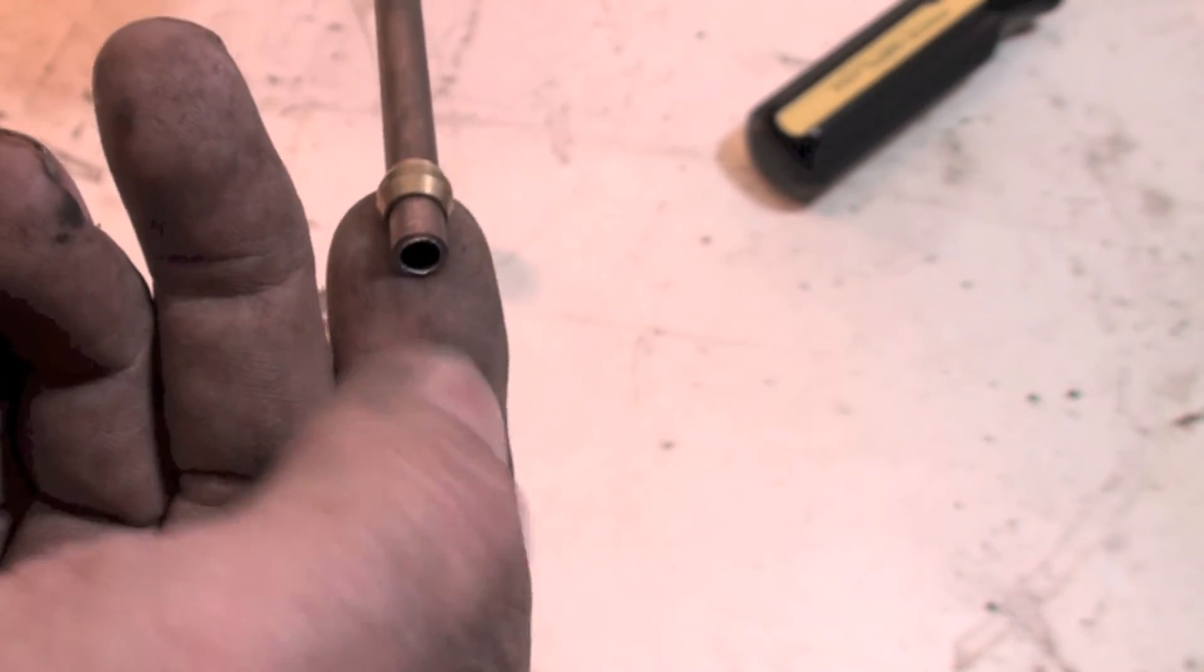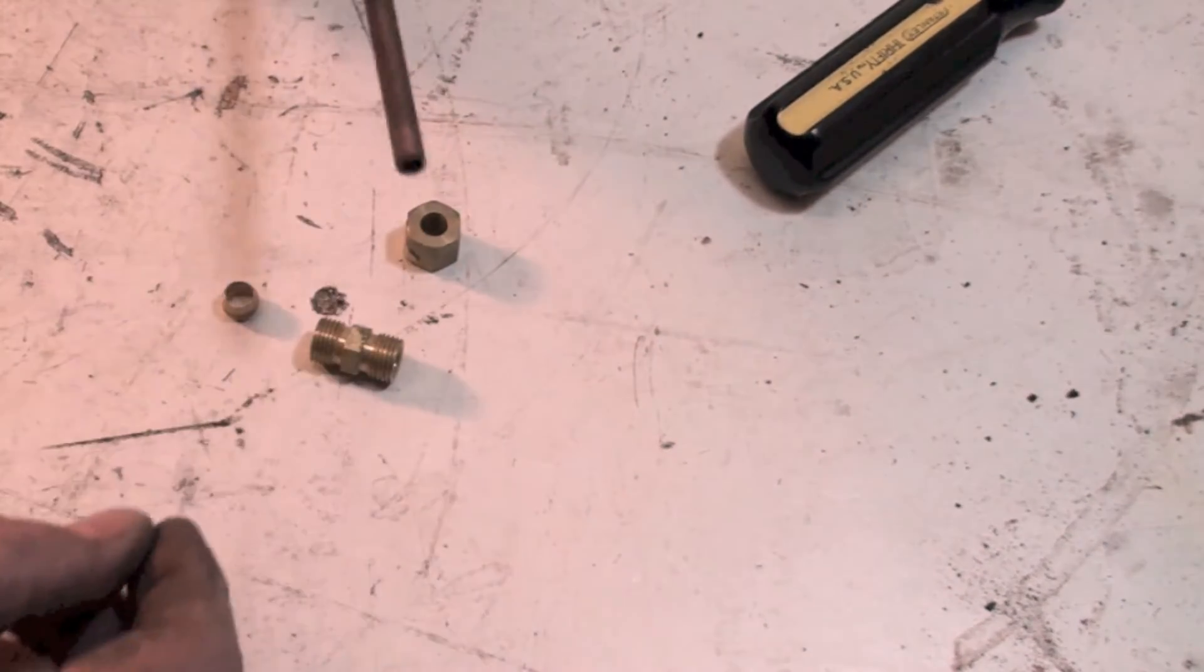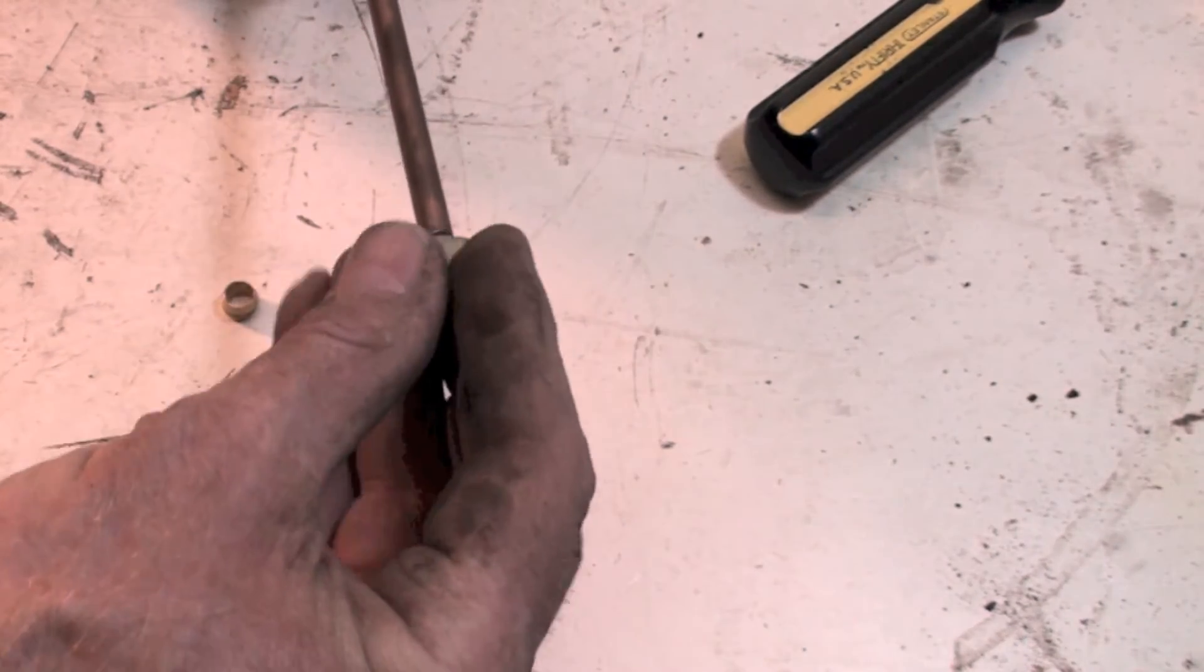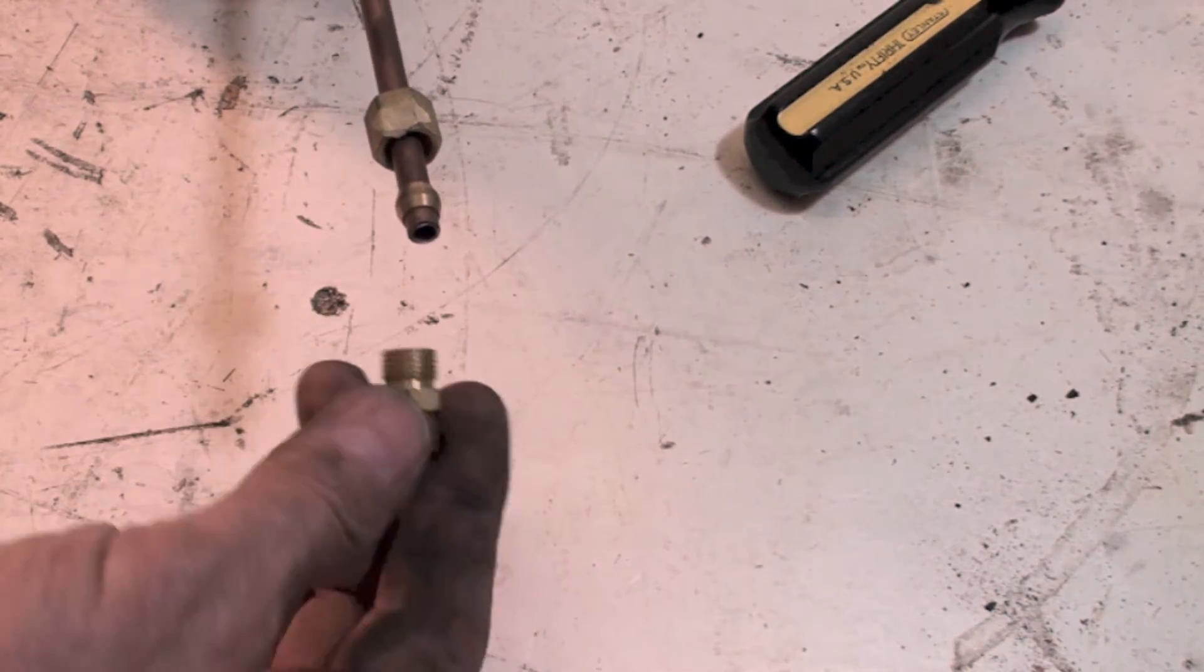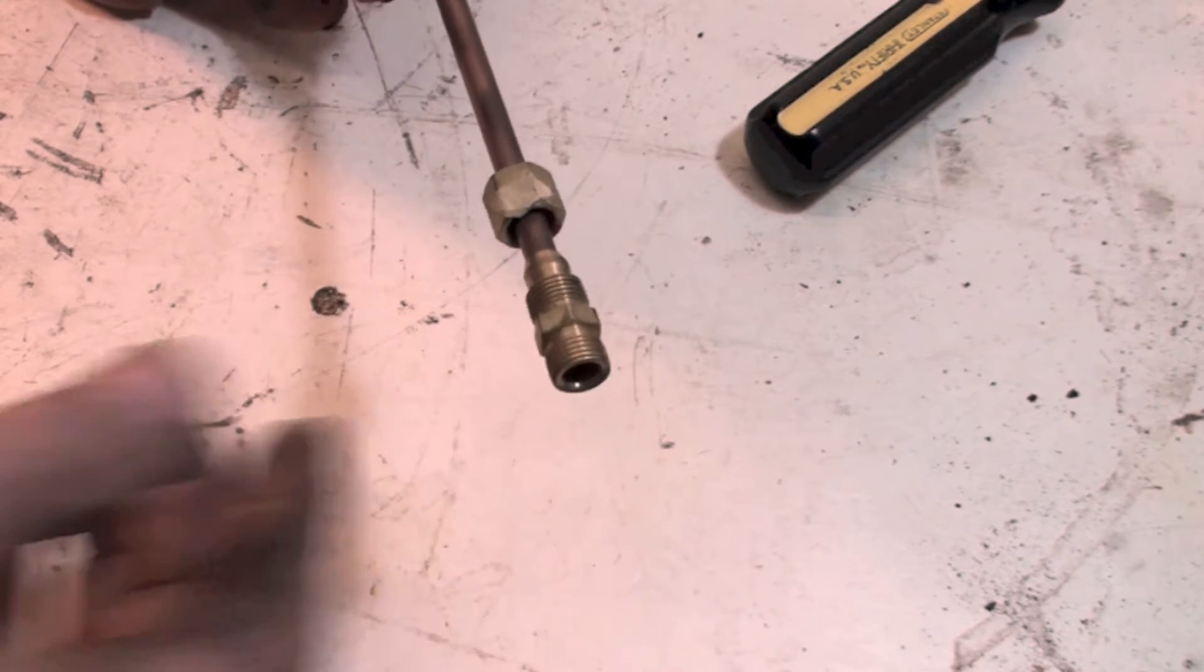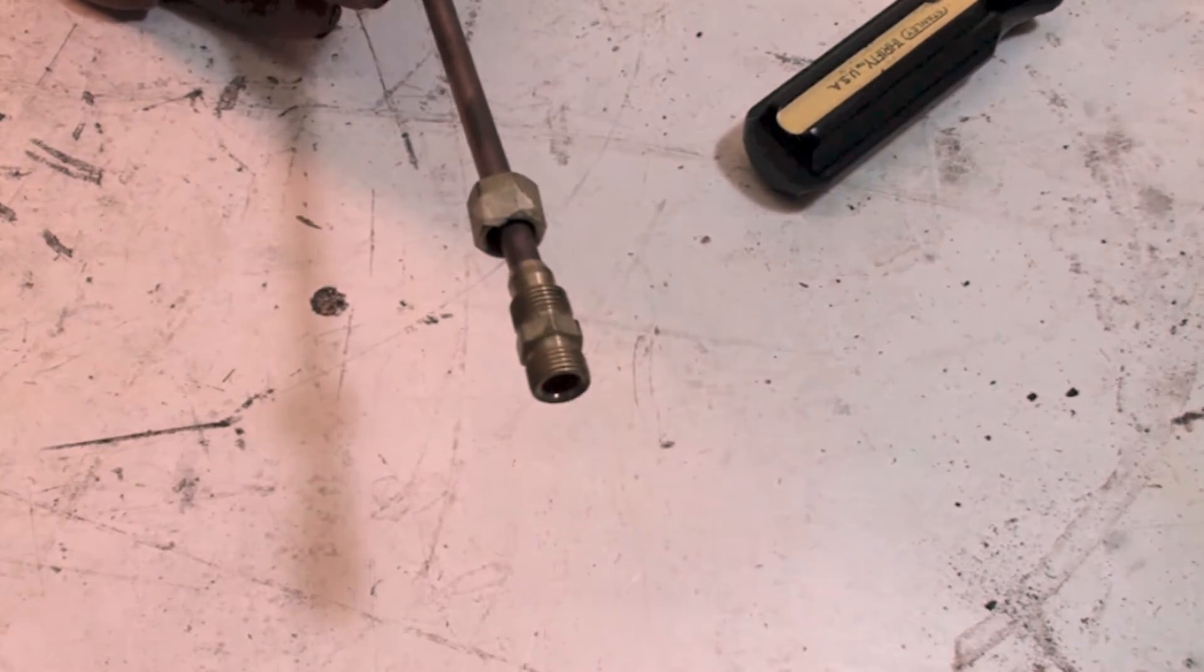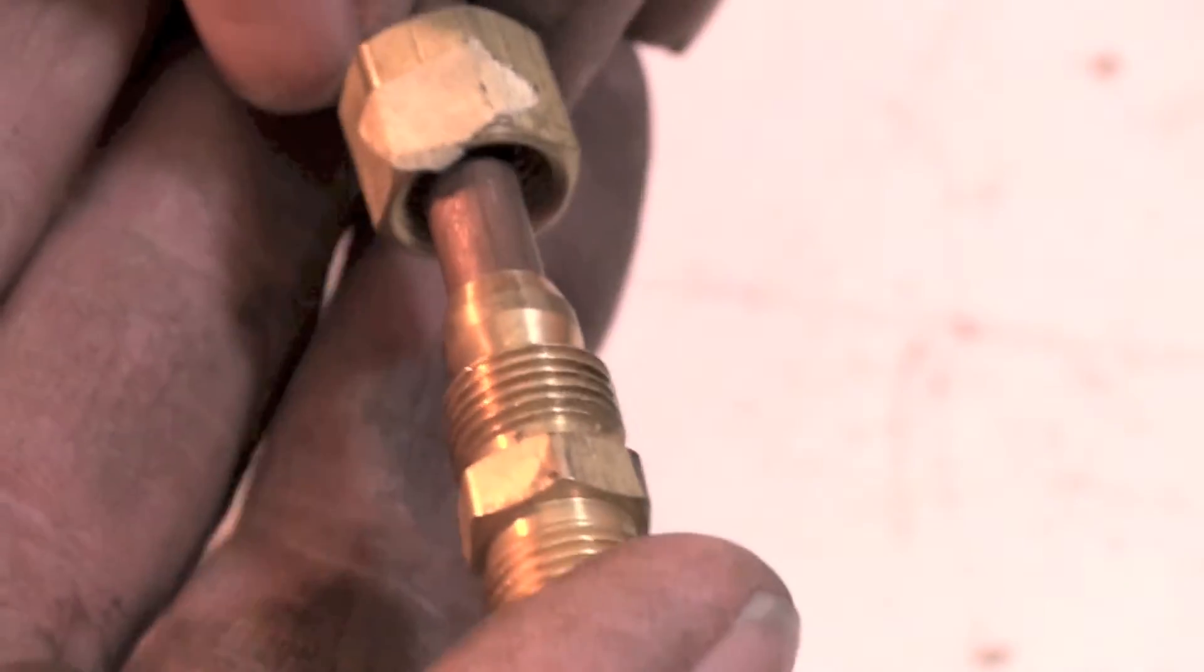Put my nut on, put my ferrule on. The only real important part of this is make sure this is seated. If that's seated down good, you're okay. Make sure your tubing is seated against the bottom, and then you get your wrenches.